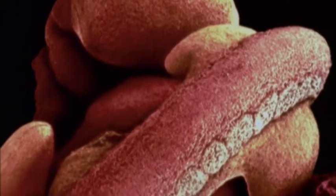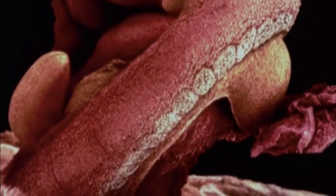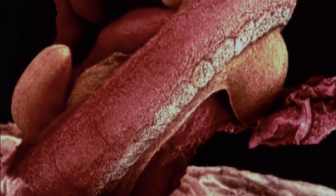As the embryo lengthens, the precursor to the backbone forms. Groups of cells bulge out on the sides, the beginnings of arms and legs.